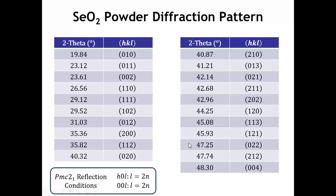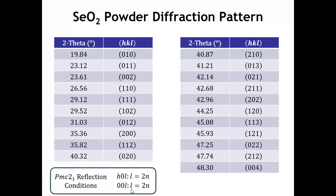These are the first 21 peaks. When we look in the International Tables for this space group, we see that the reflection conditions are H0L with L equal to 2N, and for the 00L reflections L must also be an even number. So we can look at our list of observed diffraction peaks and focus on those that fall into these two categories. Only five of the first 21 peaks belong to one of these two categories.